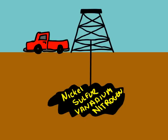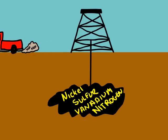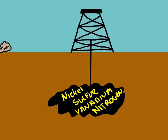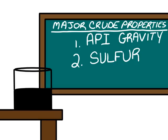Crude oil often contains contaminants such as sulfur, nitrogen, nickel, and vanadium, which are a natural part of hydrocarbon reservoirs. Sulfur and nitrogen contribute to environmental emissions when burned in your car's engine. In addition, metals like nickel and vanadium poison refinery catalysts and must be removed during processing.